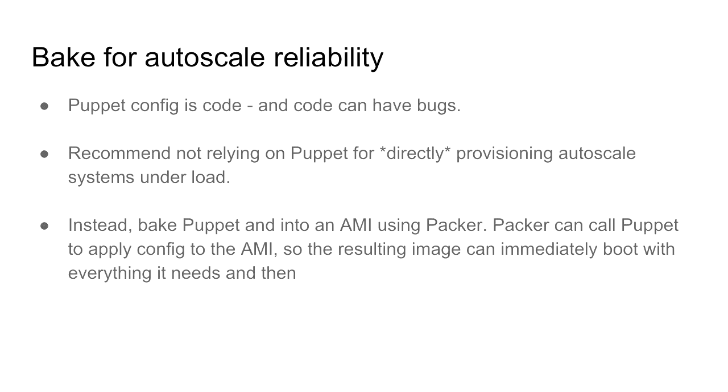You've also got to bake your server images even when using Puppet. A common design I've seen is a server comes online, Puppet runs for the very first time, and builds everything — but if you're auto scaling, that takes maybe five to ten minutes. The other problem is if Puppet breaks, your auto-scaling process is broken and you can't launch new systems. So even with all this tooling in place, you should still be baking pre-built images that you can launch.